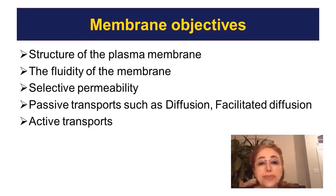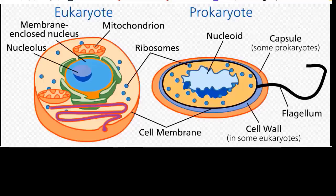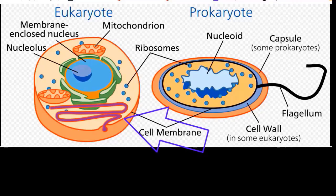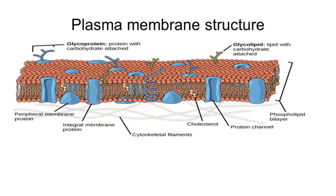As you recall from Chapter 4, the plasma membrane is the barrier that separates the interior of the cell from the outside. It controls which molecules should get into the cell or leave the cell. Now I want to talk about the structure of the plasma membrane.